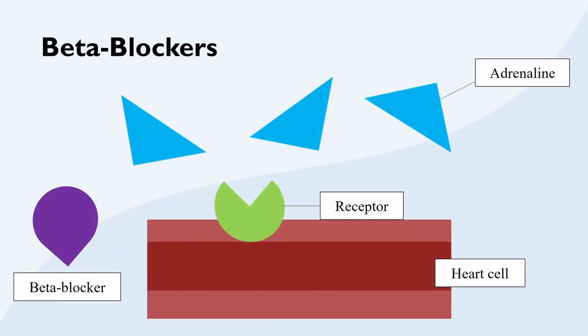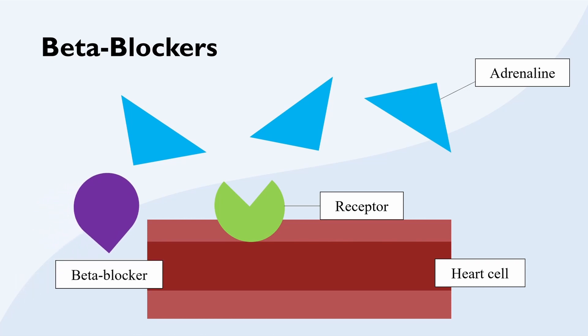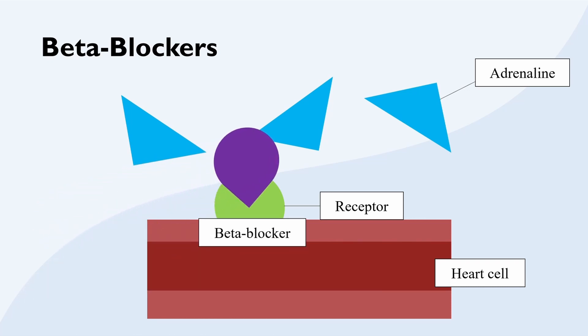Beta blockers work by blocking the action of the hormone adrenaline, also known as epinephrine, from the receptors on the heart. This mechanism causes the heart to beat at a slower pace, thereby lowering blood pressure. These medications are especially useful for controlling heart rate in patients with paroxysmal, persistent, or permanent atrial fibrillation and atrial flutter, as well as ventricular tachycardia and more.